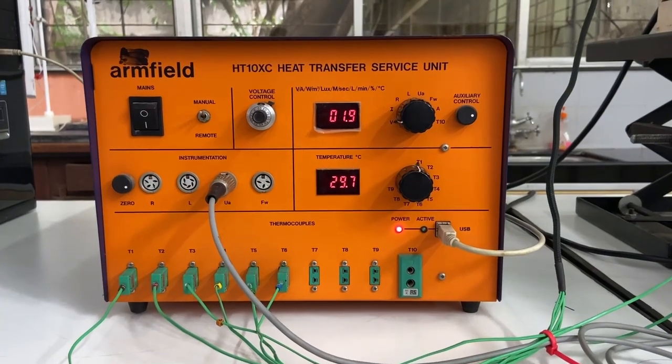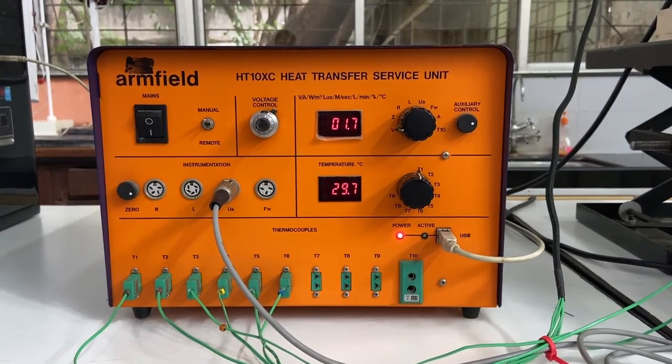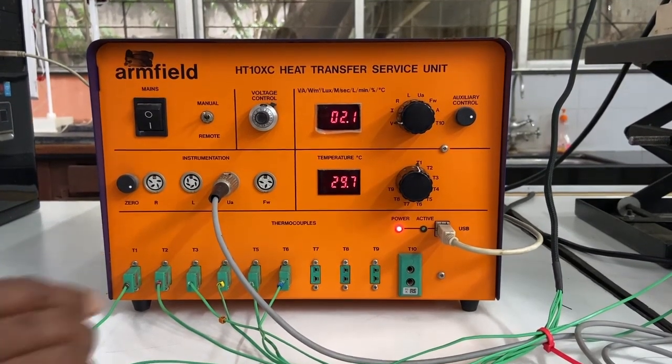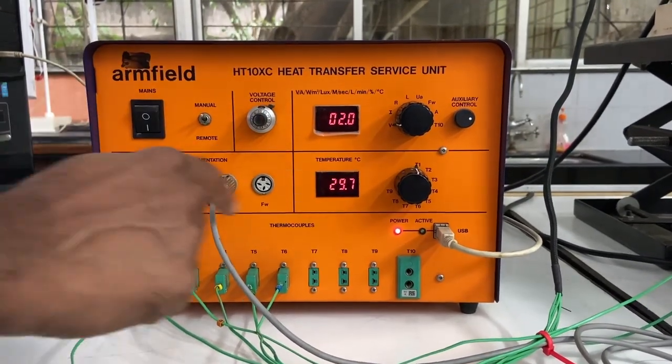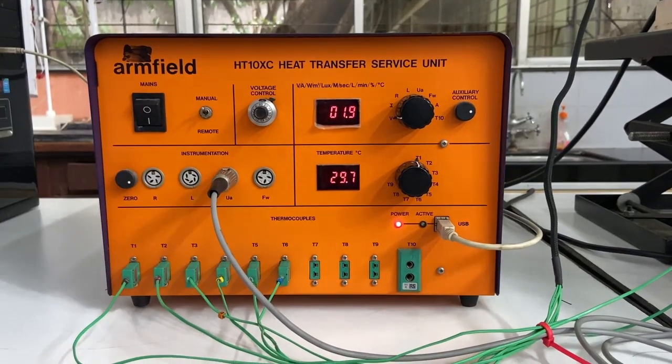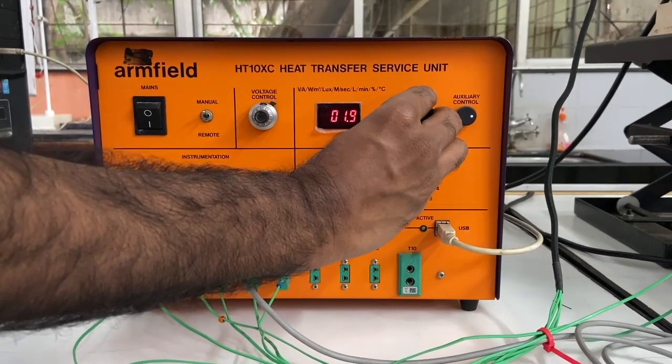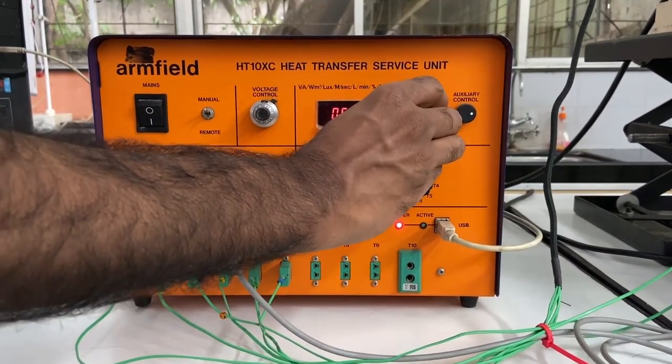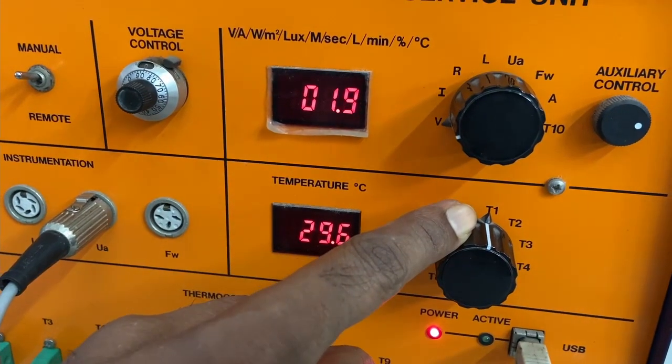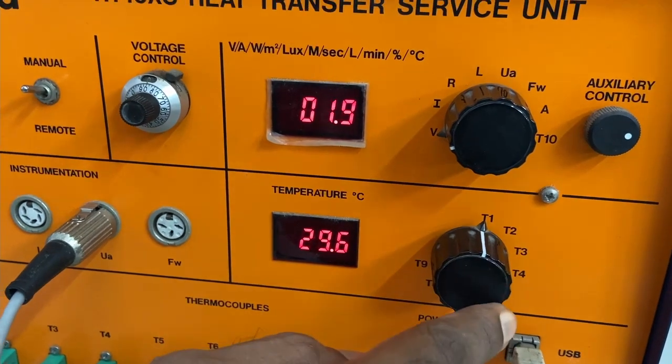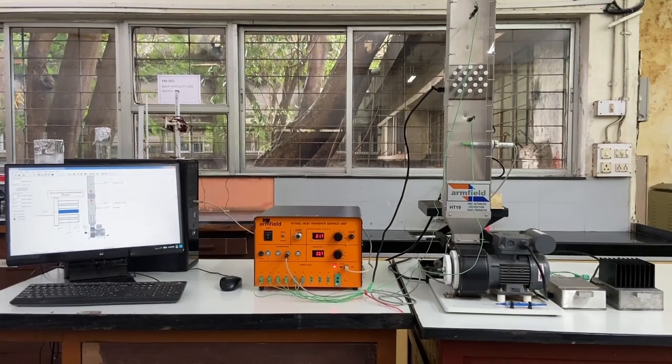We already saw that the flow rate was controlled manually by adjusting the throttle plate. The rest of the stuff here are for monitoring various quantities measured using the sensors. This display selector shows the current, voltage or power input. This display shows the selected temperature from the thermocouple connected to the sockets below. That's all for the description of the equipment.